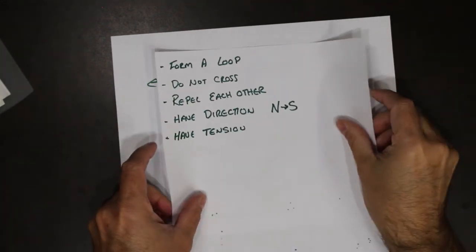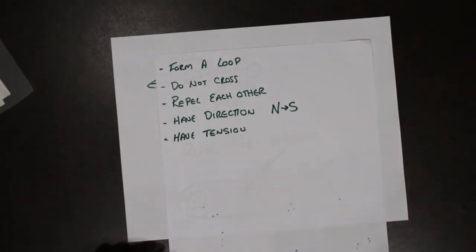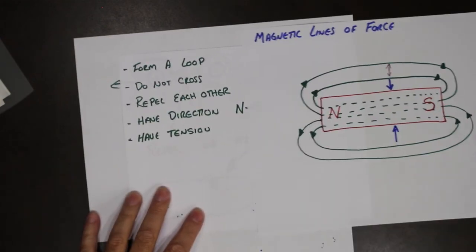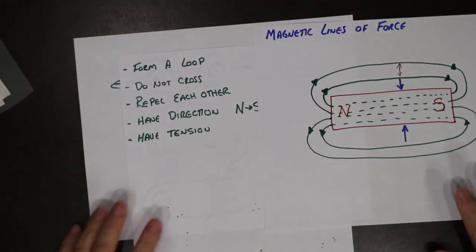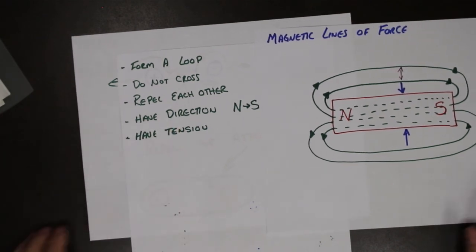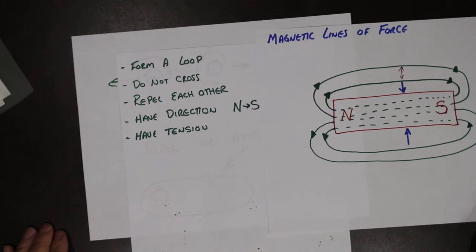So our magnetic lines of force form a loop, they do not cross each other, they repel, they have direction, and they have tension. Well, I hope this helps. Everybody stay safe, take care, and we'll see you again next time.